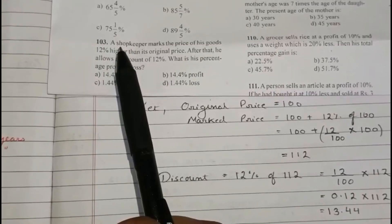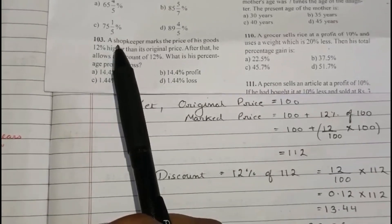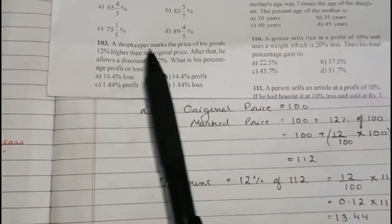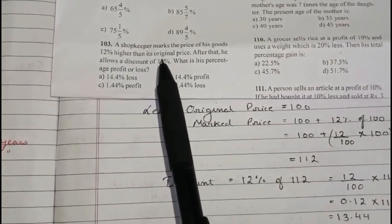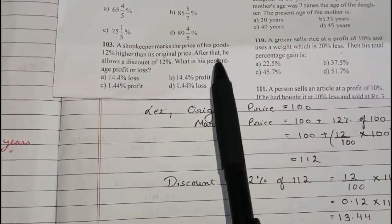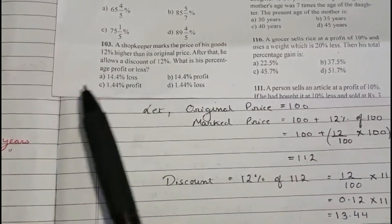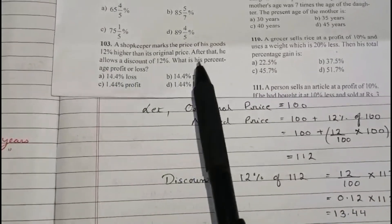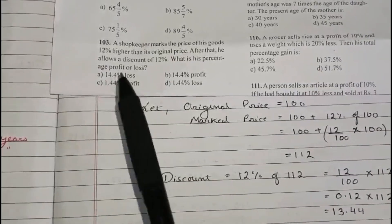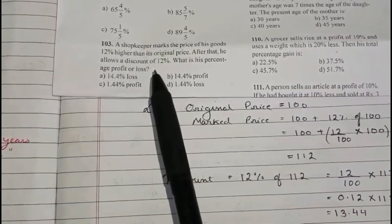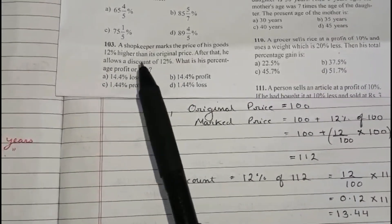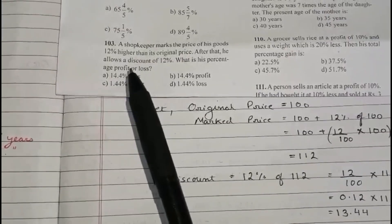Question number 103. A shopkeeper marks the price of his goods 12% higher than its original price. After that, he allows a discount of 12%. What is his percentage profit or loss?